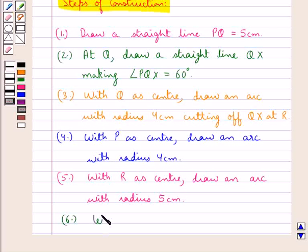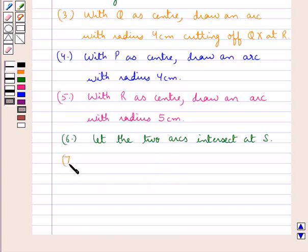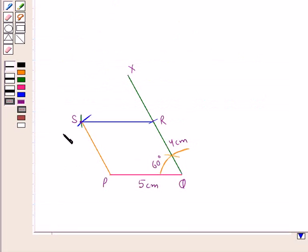Then let the two arcs intersect at S. So this point of intersection of the two arcs is the point S. Next we join PS and RS.